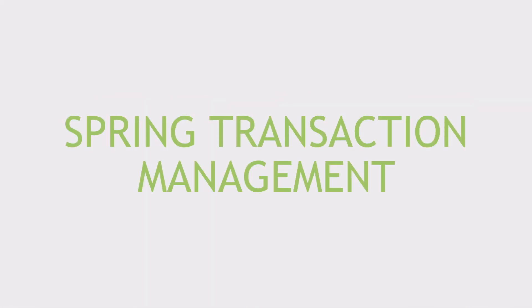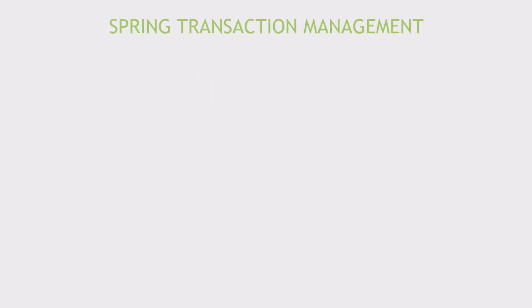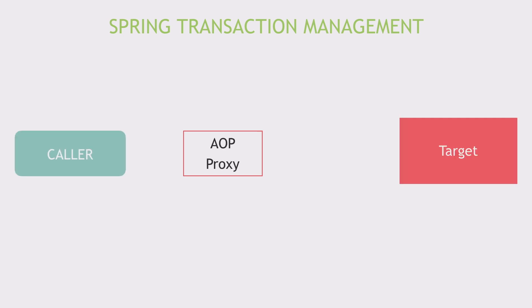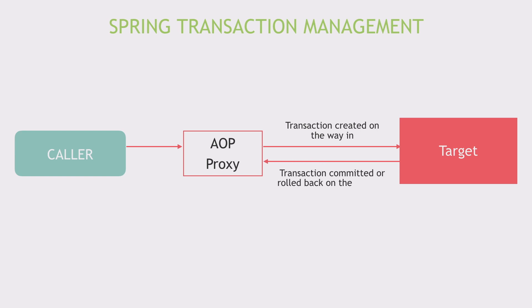Spring provides comprehensive transaction support, and here's a very simplified overview of how it works. Spring framework's transaction support is enabled via AOP proxies. So the caller of the method invokes the proxy, not the target. At this point, a transaction is created. Then the target method is invoked, and on the way back, either the transaction is committed or rolled back.